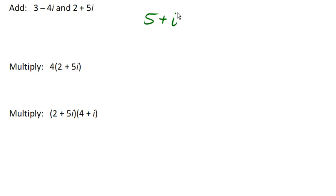So now let's multiply 4 times 2 plus 5i. So we're going to distribute here, and we'll get 4 times 2 plus 4 times 5i. And 4 times 2 is 8. 4 times 5i, we can multiply the numbers. 4 times 5 is 20. And we get 20i. So 8 plus 20i.